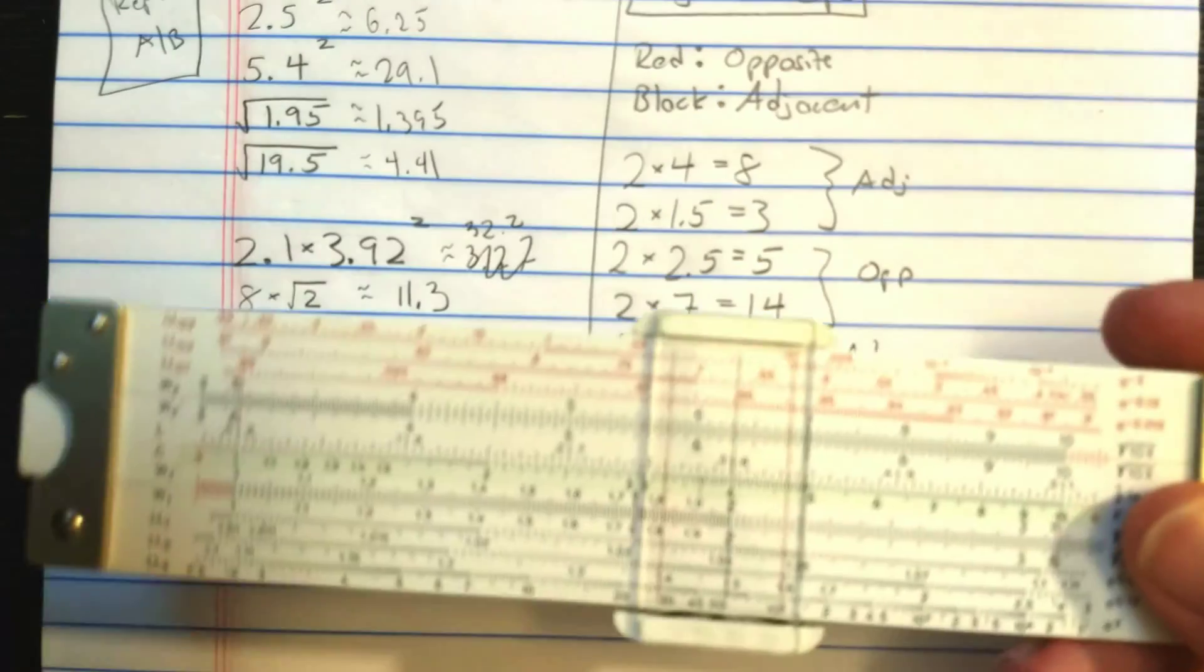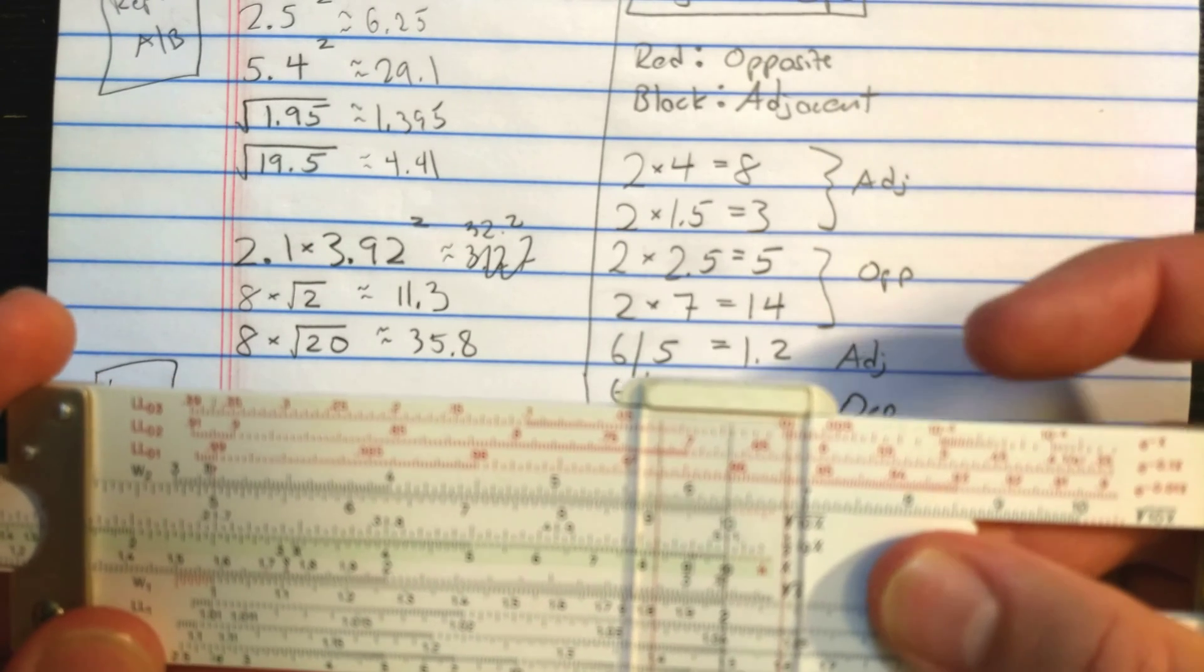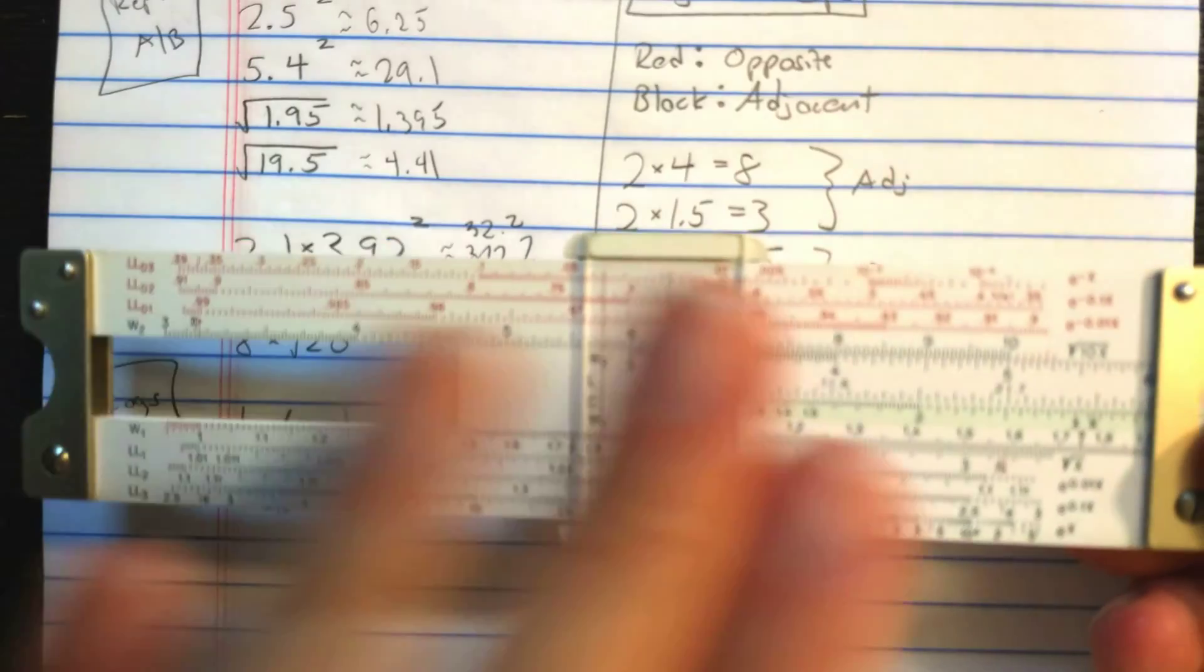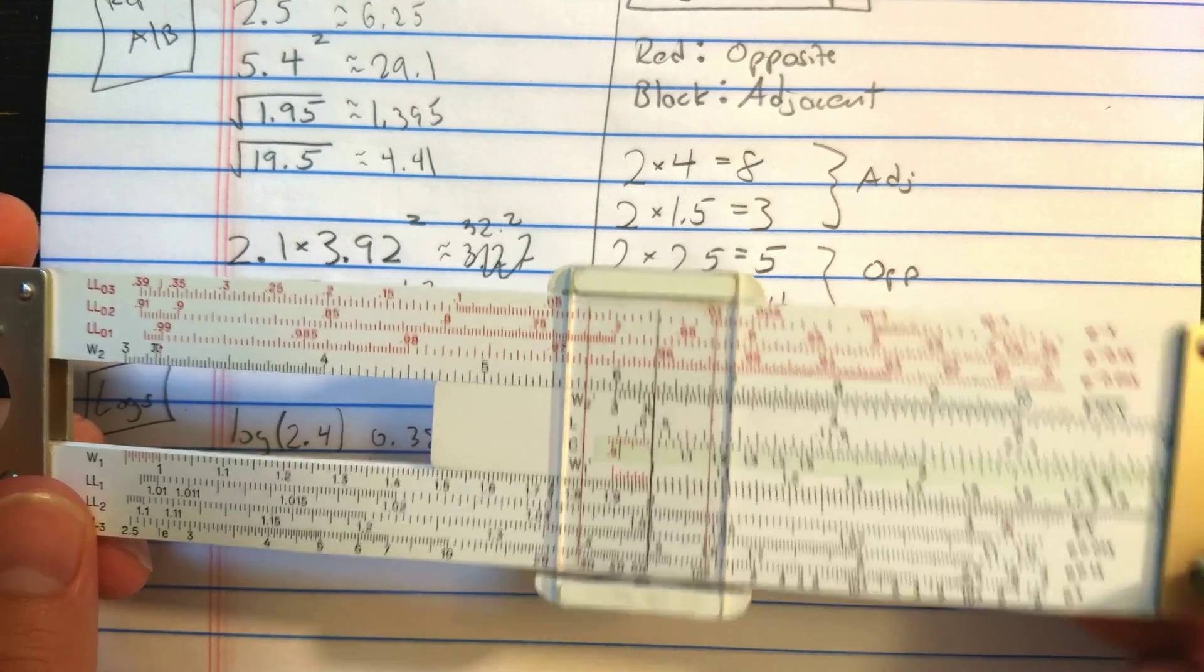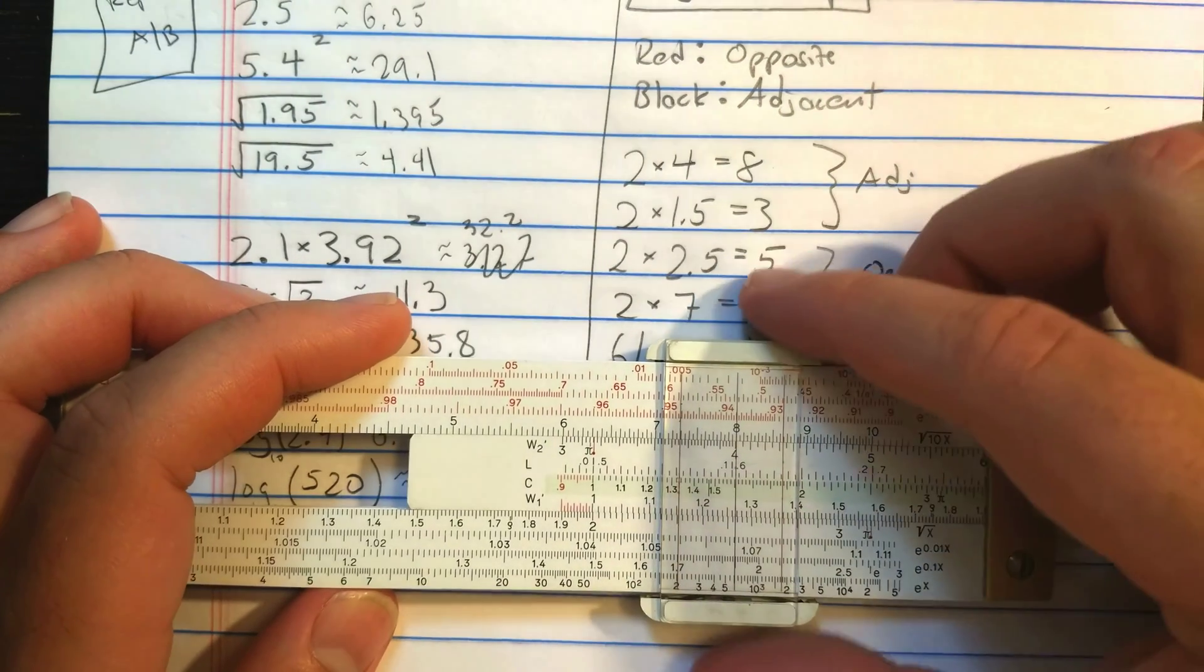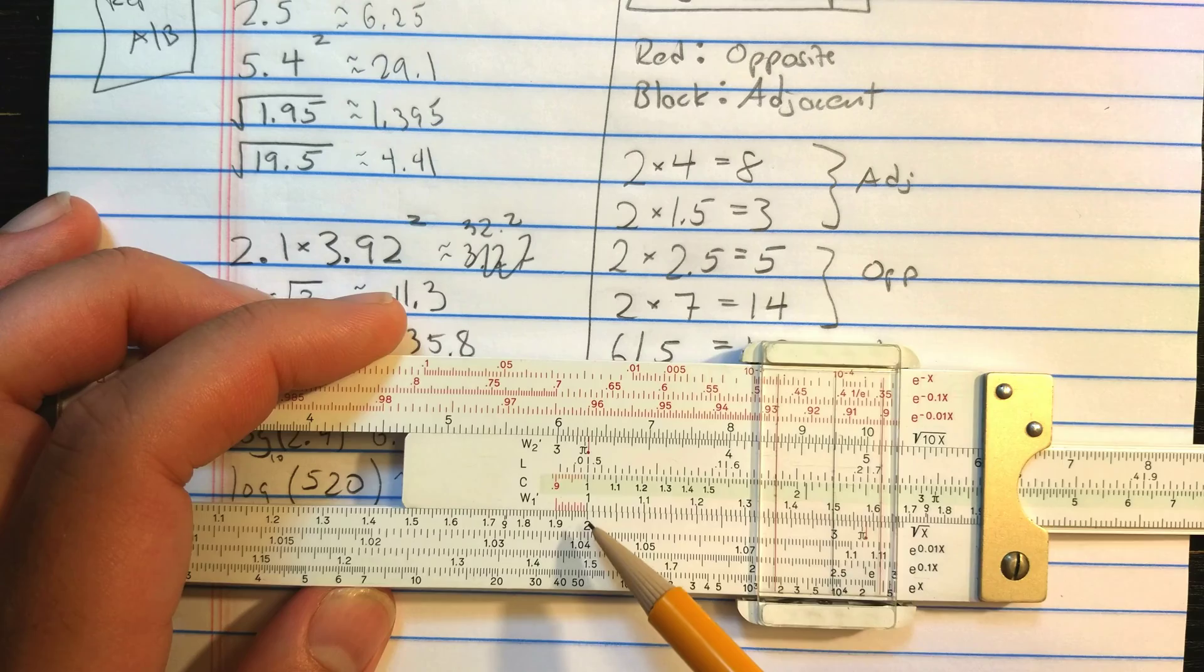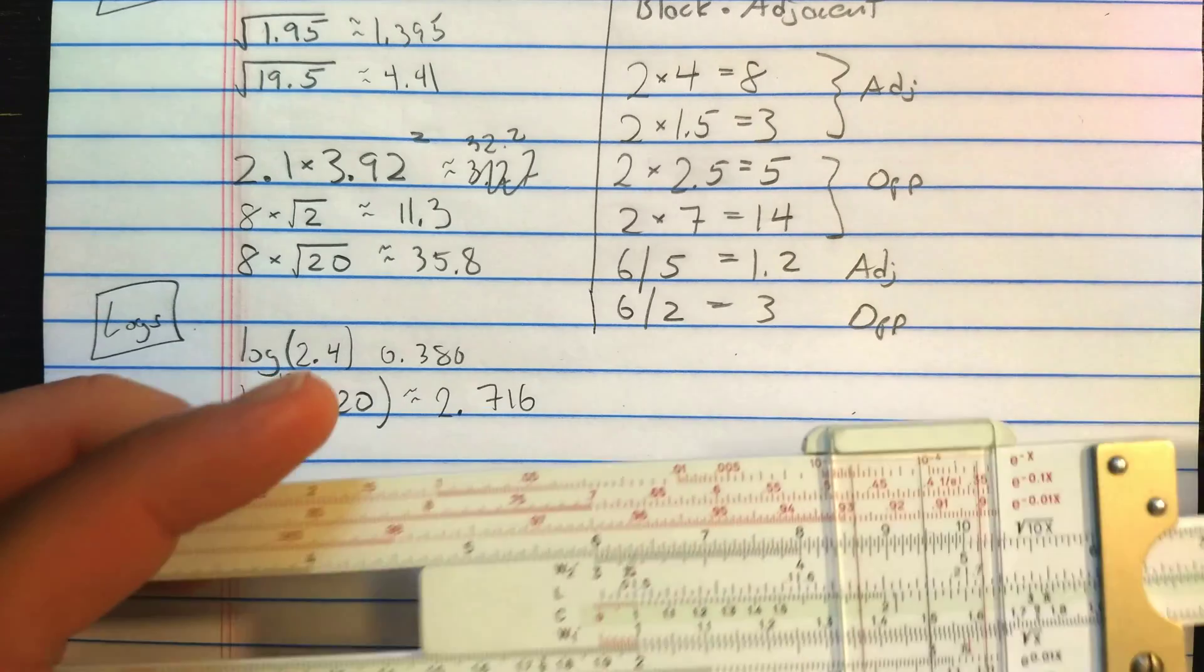So to multiply by 4, I'm going to find the 4 on W1. I'm going to align the index. I'm not going to be on scale there. So I need to align this index. Okay. That index is black. So when I find the 4, I should read the result adjacent, or 8. But if I was to want to do 2 times 1.5, I would read the result adjacent here, 3. Okay, that's because I used a black index. This one, or this 10 over here, which are black.